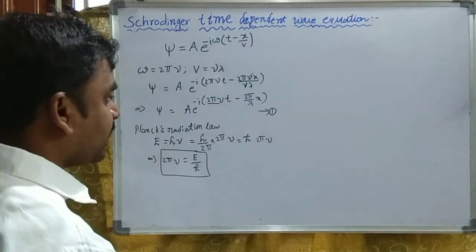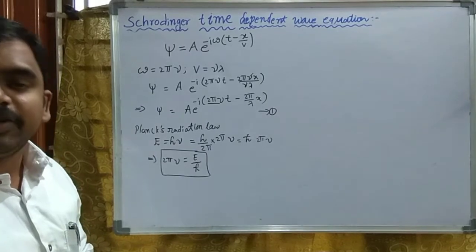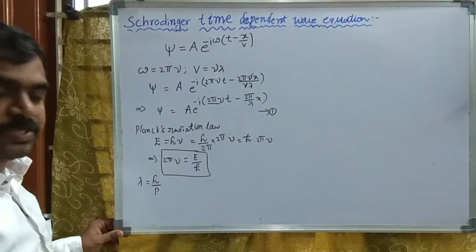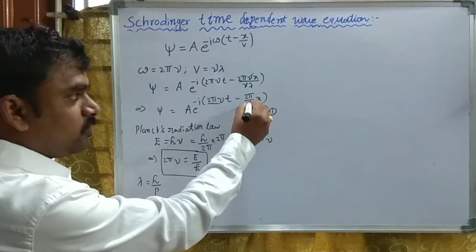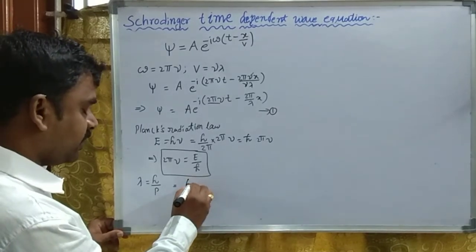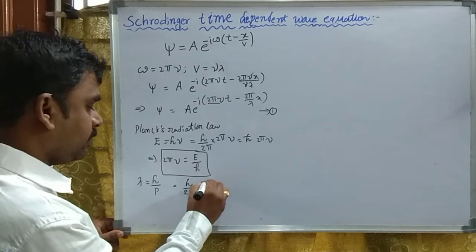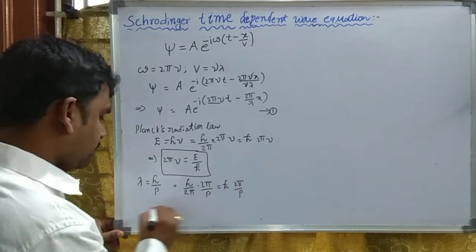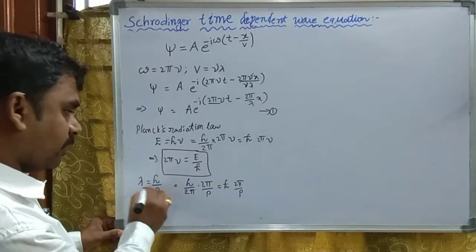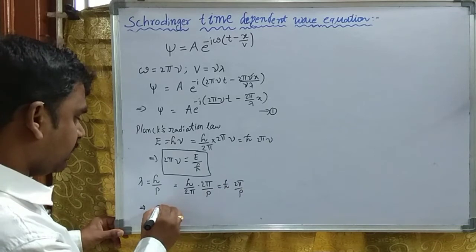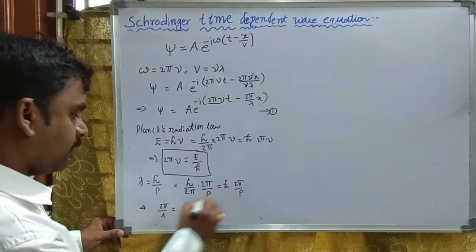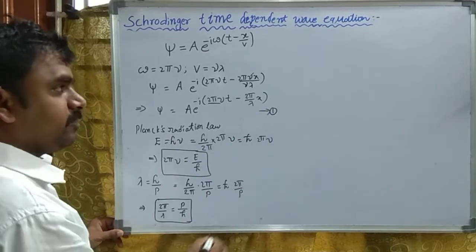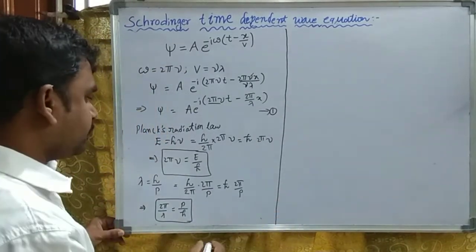Next, for the term 2·pi/lambda, I introduce de Broglie's wavelength, which is associated with momentum: lambda equals to h/p. Again, multiplying and dividing by 2·pi gives h/2·pi times 2·pi/p, which is h-bar·(2·pi/p). Rearranging, 2·pi/lambda equals p/h-bar. I am calling this equation number three. Now I will substitute equations two and three into equation one.